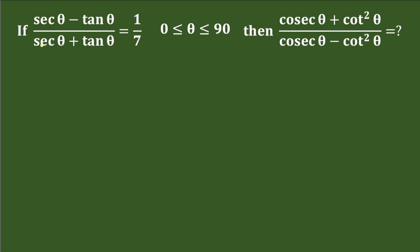Welcome back to my YouTube channel, The Warrior Classes. Today we are going to solve this interesting trigonometric problem: if sec θ minus tan θ divided by sec θ plus tan θ equals 1/7, and θ lies in the first quadrant, then we have to find the value of cosec θ plus cot²θ divided by cosec θ minus cot²θ.